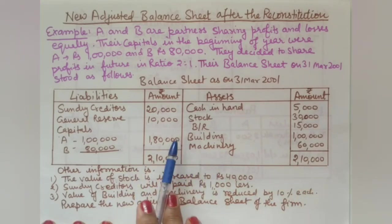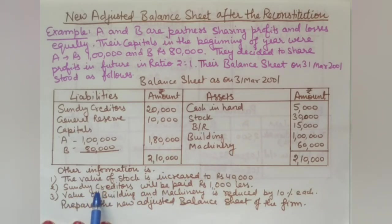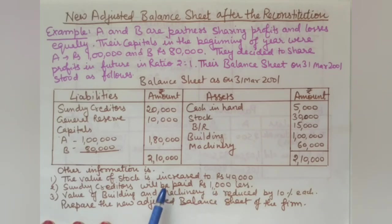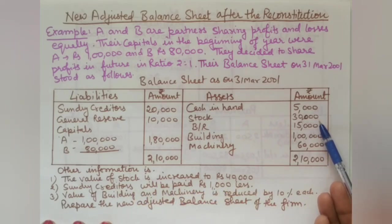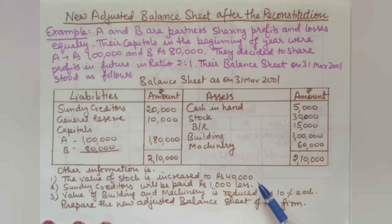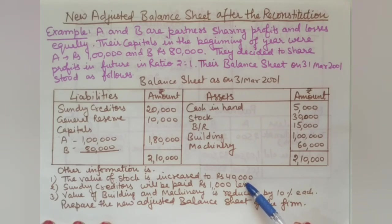The additional given information: the value of stock is increased to 40,000 rupees. Previously it was 30,000 rupees, so stock has increased by 10,000 rupees. We have already made a revaluation account in the previous video. This increase of 10,000 will be recorded on the credit side of the revaluation account.